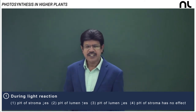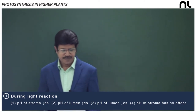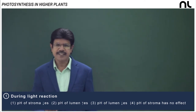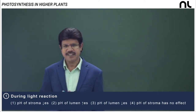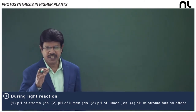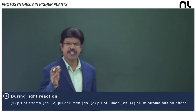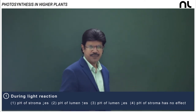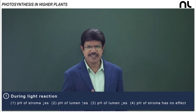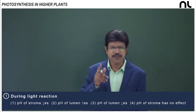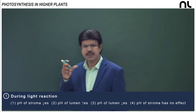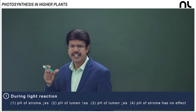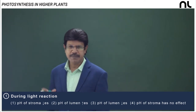This light reaction is a photochemical phase where light energy is converted into chemical energy. In this light reaction, the first step is absorption of light by the chlorophyll pigment.